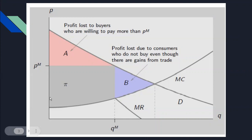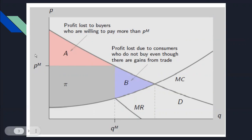When we have marginal cost and marginal revenue intersecting, they give us one quantity. We put that quantity to the demand curve to get the price. The gray area represents the maximum profit a company could earn. In the pink area, called area A, and the blue area, called area B, the company could charge higher than the equilibrium price.